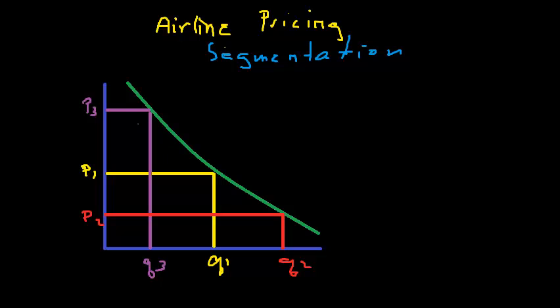So recall from one of our earlier videos we had a demand curve that looked like this. We had three different price levels and those represented the fares in the market, and we said that having more than one fare in the market actually increased revenue. Now we're going to look at how do airlines actually choose these price levels. So for P1, P2, and P3, what are the actual fares that you see in the market?